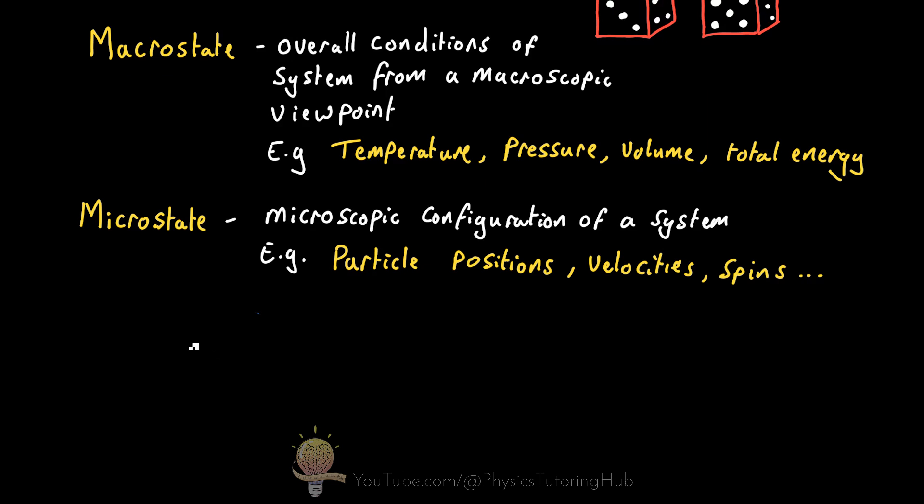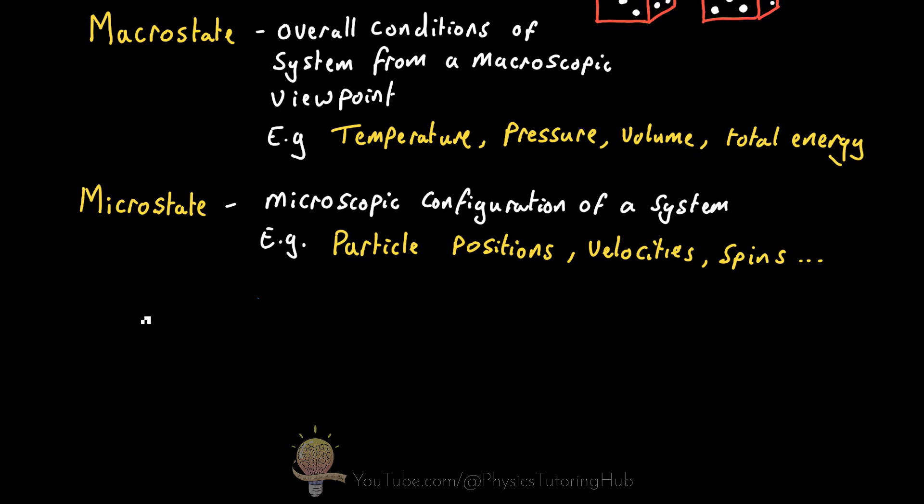And let me show you why this is with a simple example. Let's say we have a small box that contains two point-like particles. We can measure the macrostate of this system by finding its temperature or the average kinetic energy of the two particles. We can also find the pressure, which will depend on the average force imparted by these particles on the walls of the box.